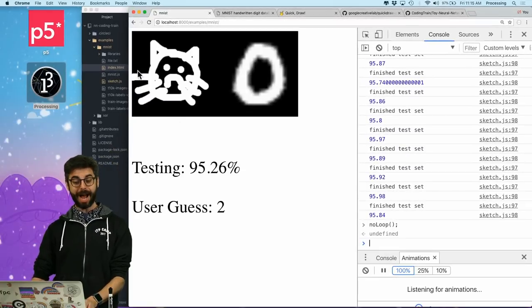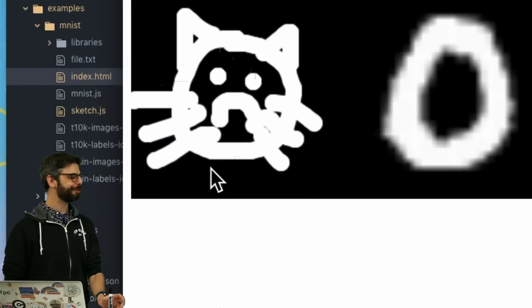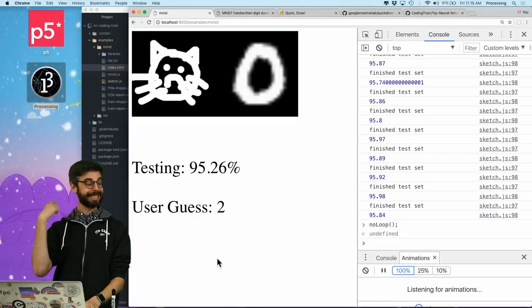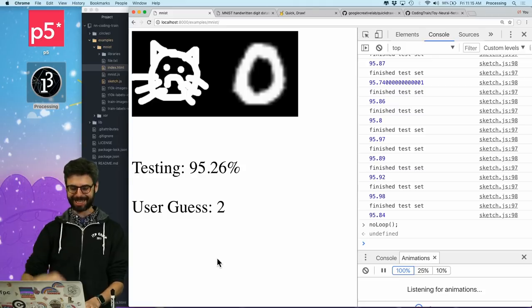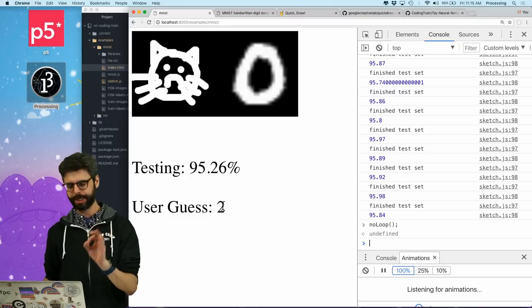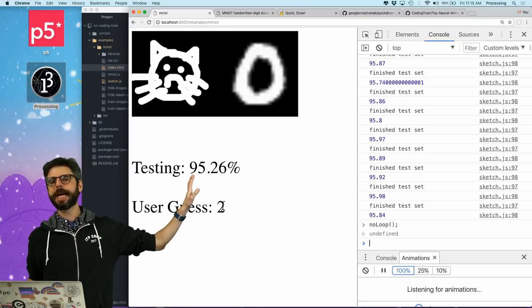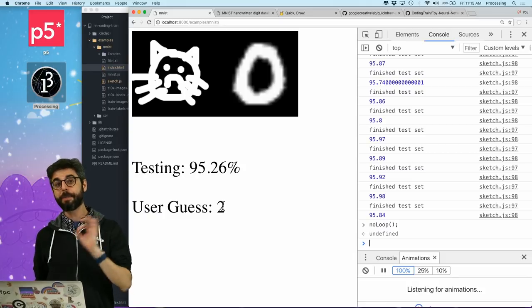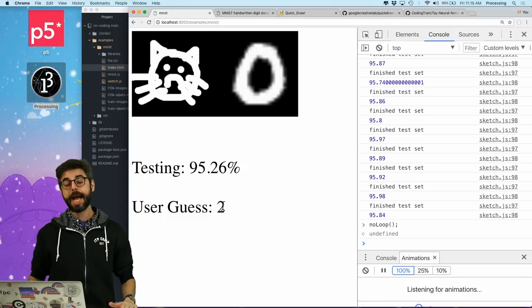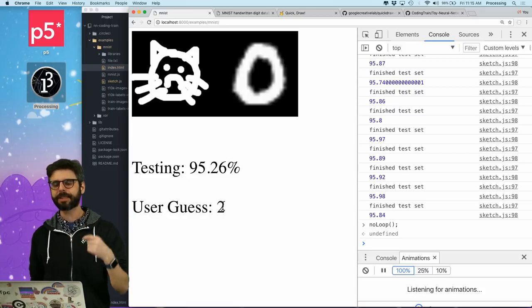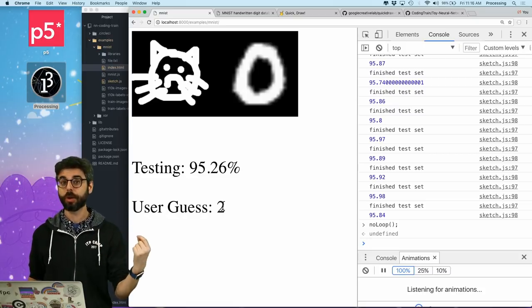What I have over here is my beautiful drawing of a wonderful kitty cat, which my example of trying to guess what digit that kitty cat is, it guessed it as a two. So what I want to do in this series is build from the very beginning a MNIST-style classifier, but instead of classifying digits, I want to classify doodles.